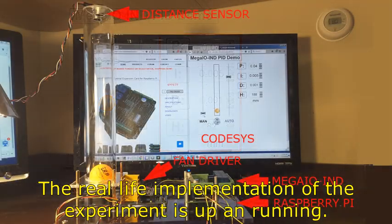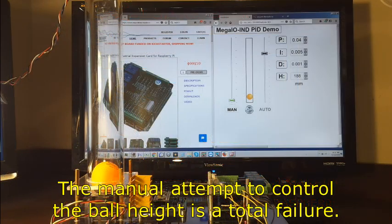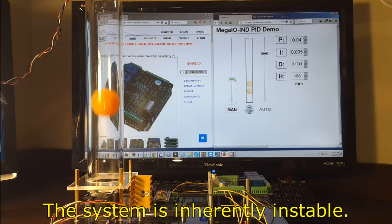The real-life implementation of the experiment is up and running. The manual attempt to control the ball height is a total failure. The system is inherently unstable.